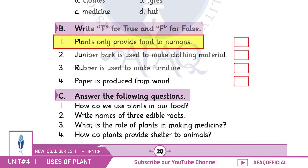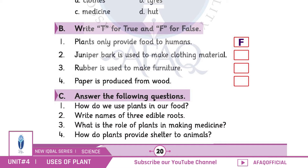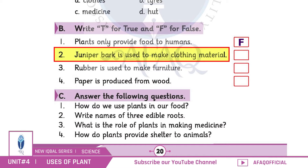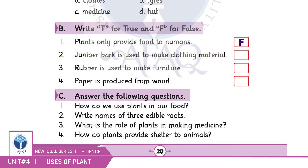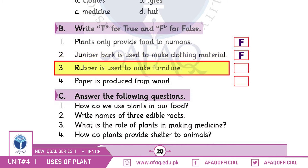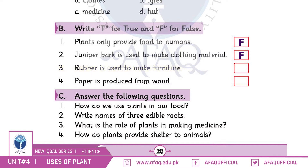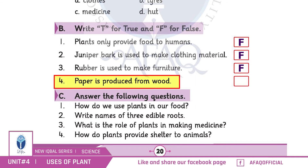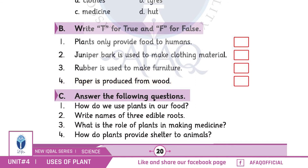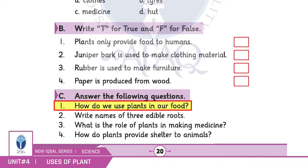True or False: Plants only provide food to humans — False. Juniper bark is used to make clothing material — False. Rubber is used to make furniture — False. Paper is produced from wood — True.